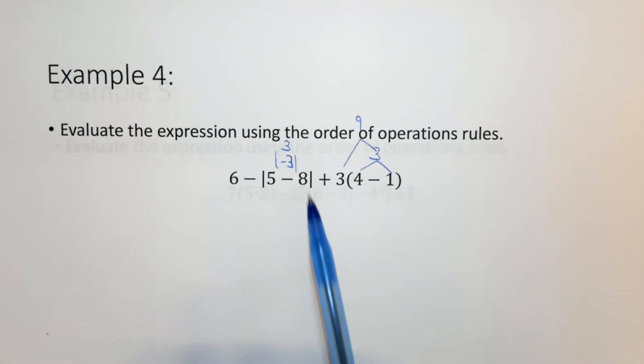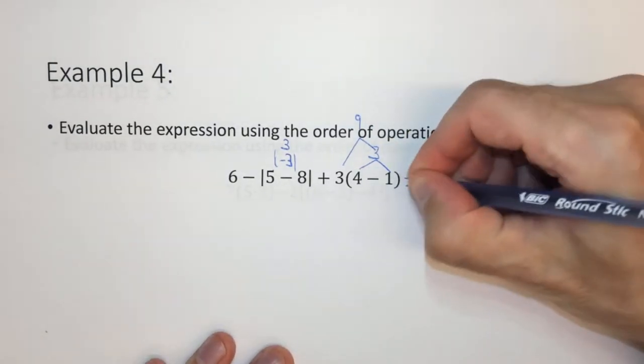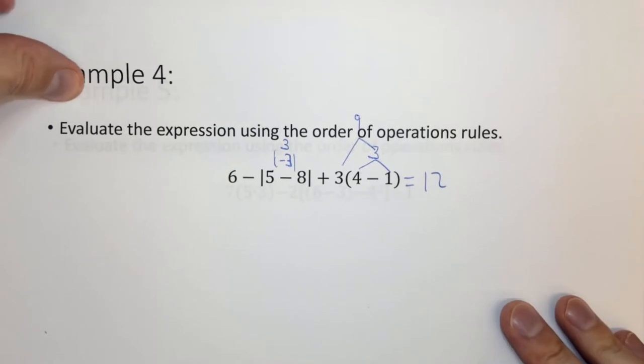So now we have 6 minus 3 plus 9. 6 minus 3 is 3 plus 9 is 12. So that's how we get 12 as the answer to this problem.